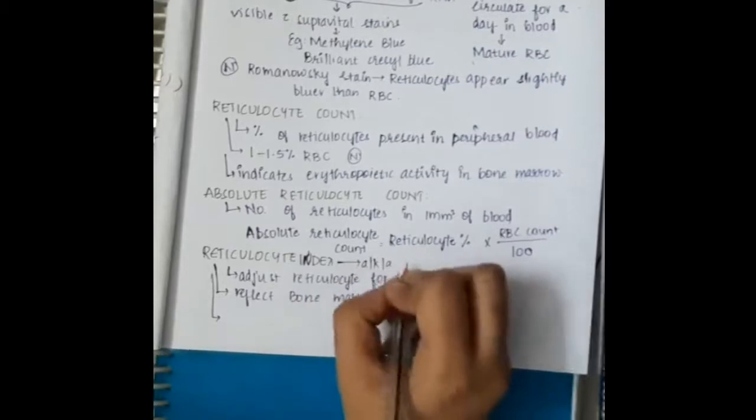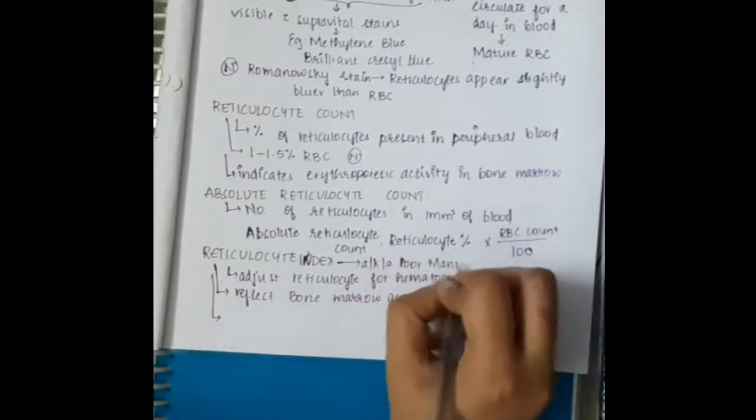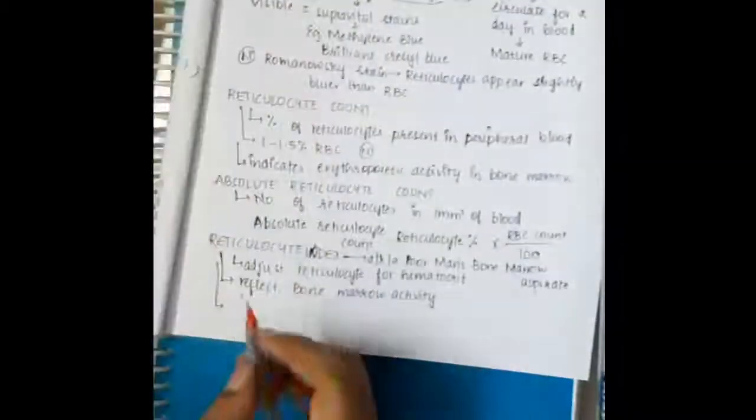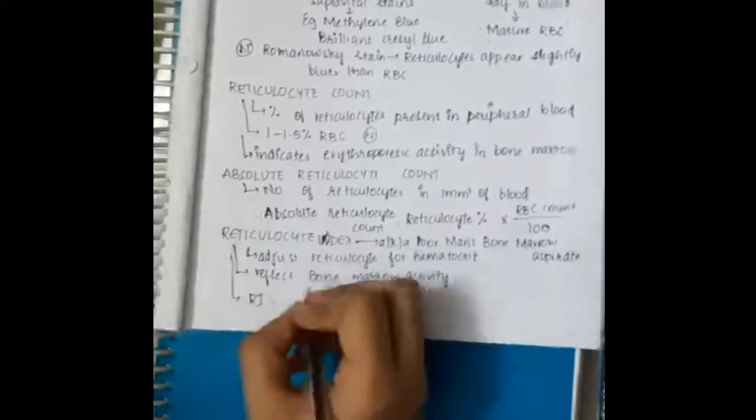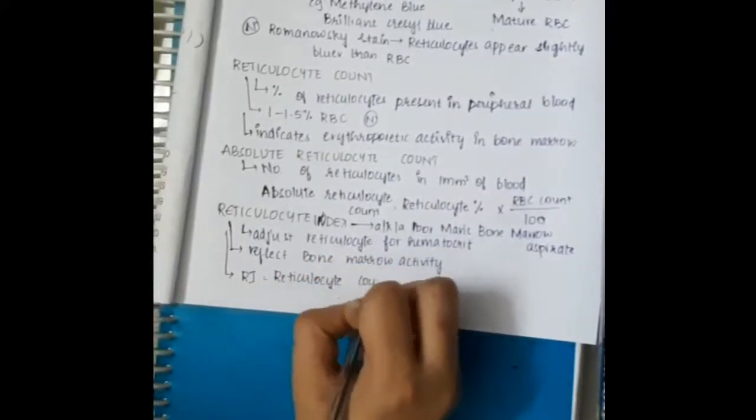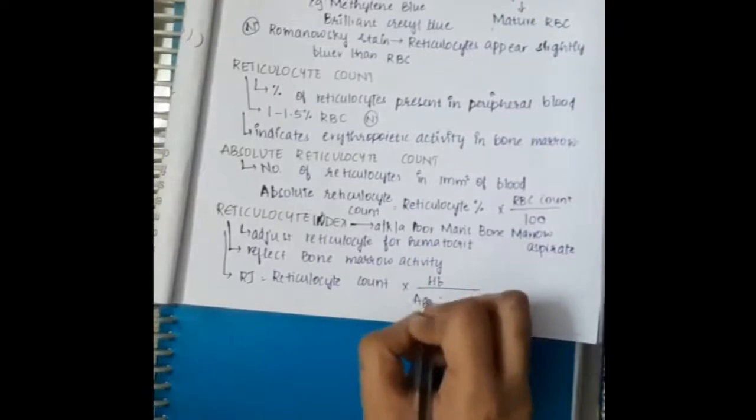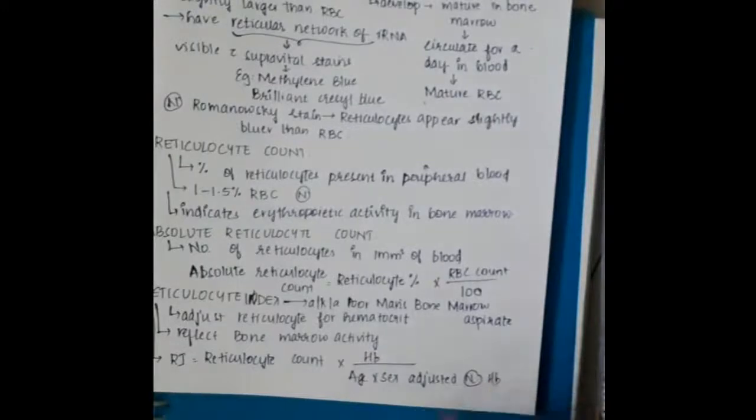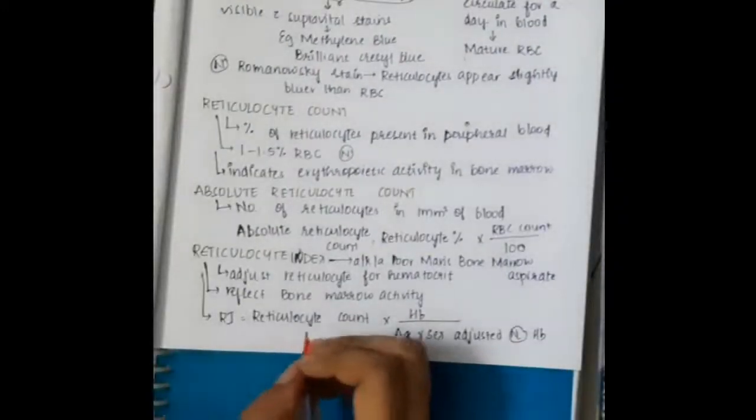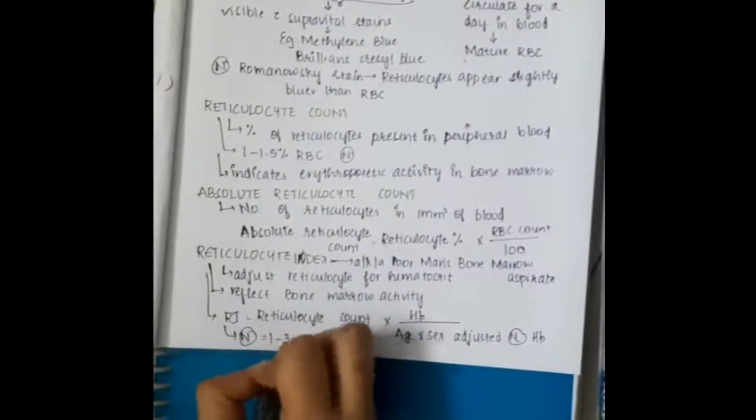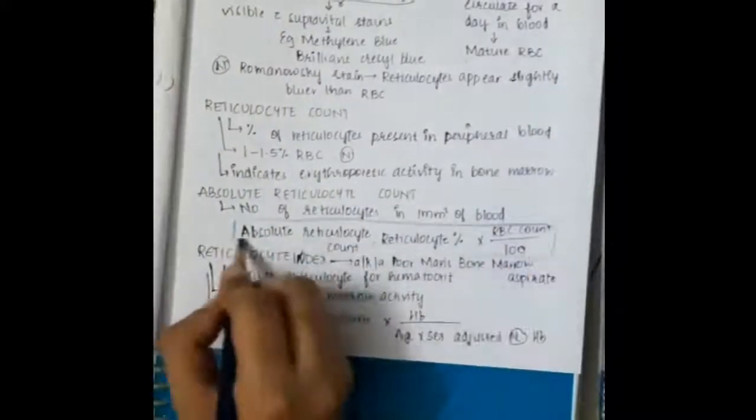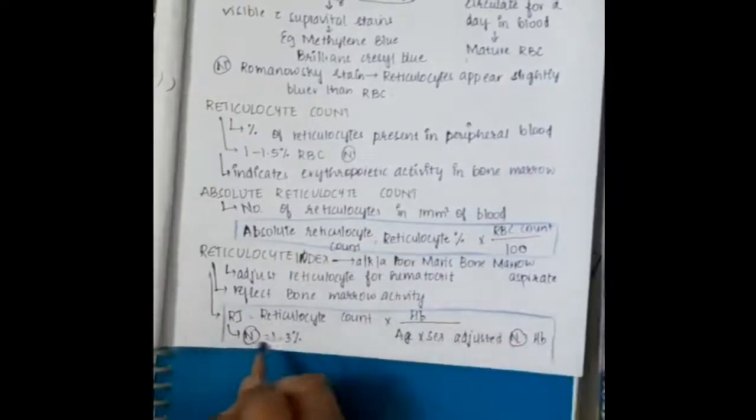The reticulocytes present in a person with hemoglobin of 10 and reticulocytes present in a person with hemoglobin of 4 are not physiologically similar to each other. To balance this out, we calculate reticulocyte index, which equals reticulocyte count into hemoglobin by age and sex into sex adjusted normal hemoglobin count. Normal reticulocyte index is 1 to 3 percent.